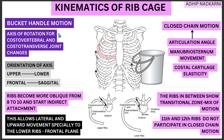The axis of rotation for this movement is present at the costo-vertebral and costo-transverse joint, and it changes. That means as you go from upper to lower rib levels, the orientation of the axis at the costo-vertebral and costo-transverse joint will vary. At the upper ribs, it will be more in the frontal plane, and as you go to the lower ribs, it will be more towards the sagittal plane. The orientation of the axis moves from frontal plane orientation to sagittal plane orientation as you go from upper all the way to lower.